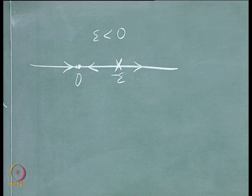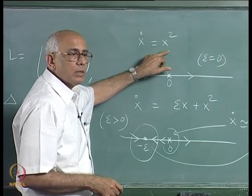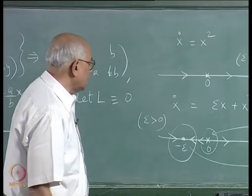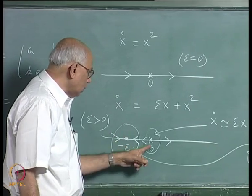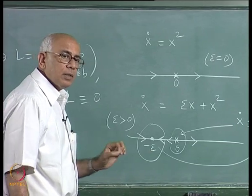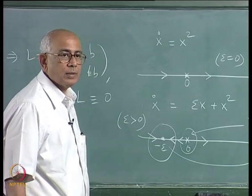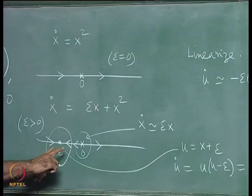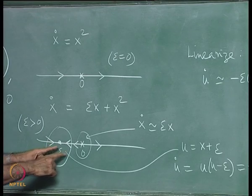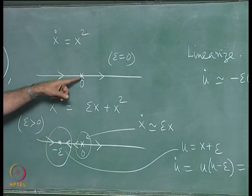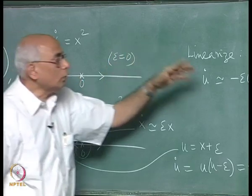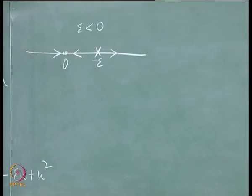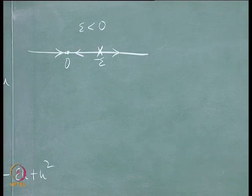The system x-dot equal to x-squared arises by accident — by the coalescence of two critical points, one at the origin and one at minus epsilon. As the second critical point crosses zero, what was initially an attractor at minus epsilon and a repeller at the origin becomes a higher-order critical point when the two coincide. Moving to negative epsilon gives a repeller at minus epsilon and an attractor at the origin — an exchange of stability.